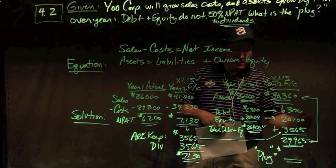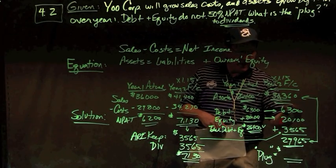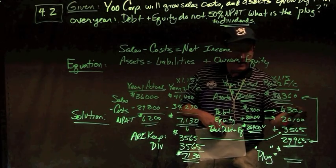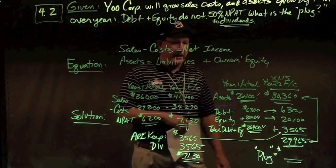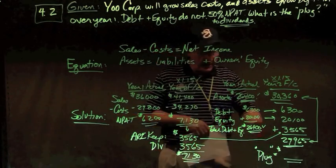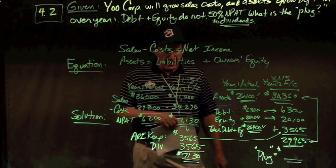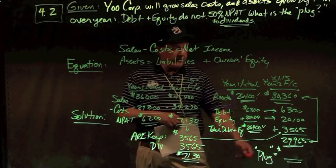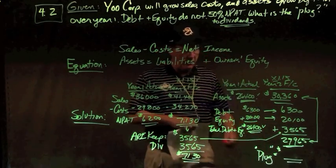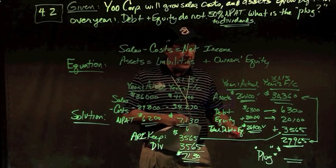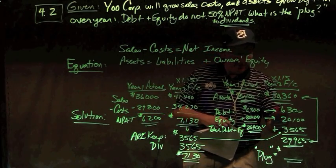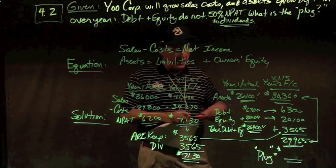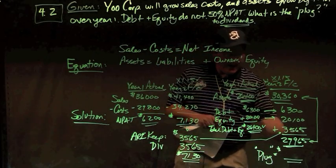So the additions to retain earnings move to the equity account in year two, my assets are $30,360, and then I want to see if my balance sheet is balanced. So I have $6,300 still on the debt line, $20,100 in the equity line, again no change, and I must move my additions to retain earnings. Half of my net income of $3,565 into the right side of the balance sheet, and I want to see if I'm balanced. I have assets of $30,360, and when I add my debt plus equity plus additions to retain earnings, I get $29,965.